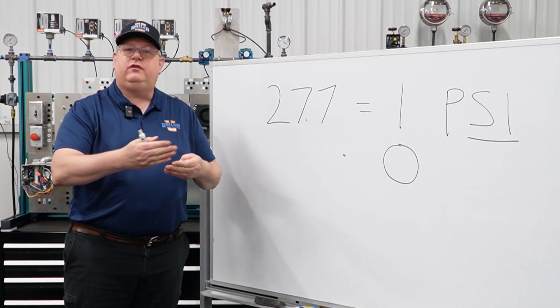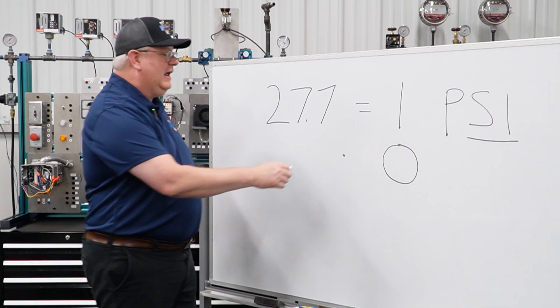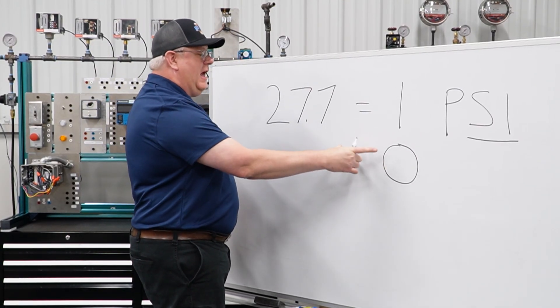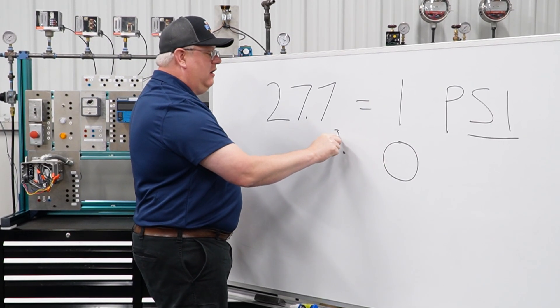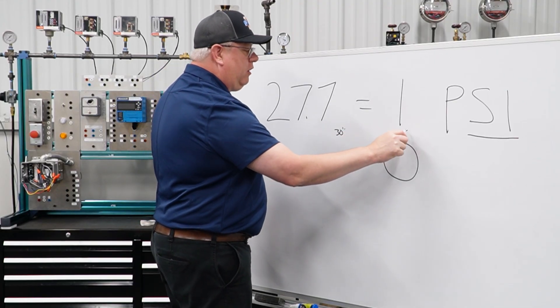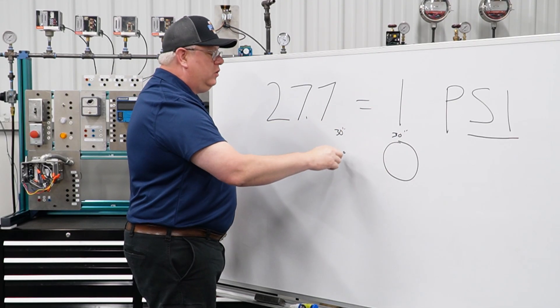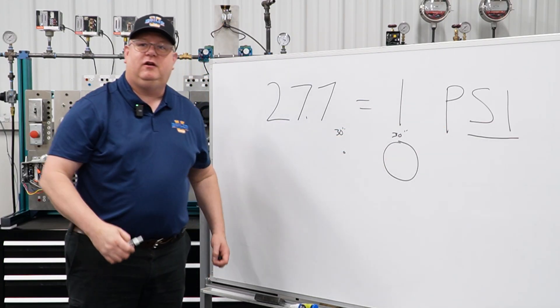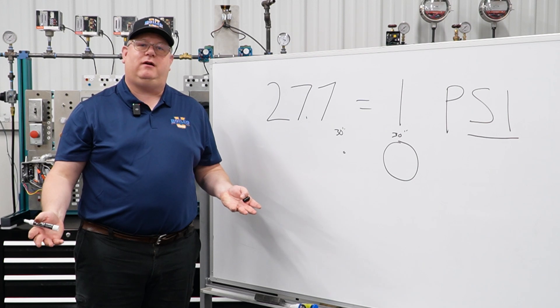So regardless of the weight, if we take the area, we're basically dividing the weight. So if we had 30 inches of water column above one, 30 inches of water column above the other, we're still dividing by the area back to square inch. So that's why it doesn't actually matter.